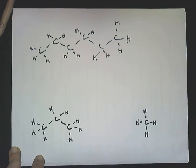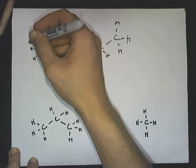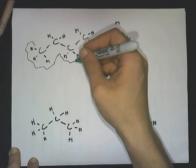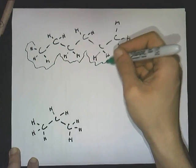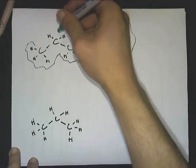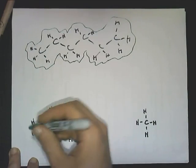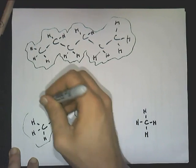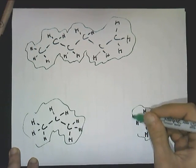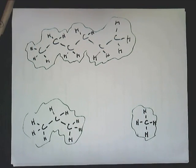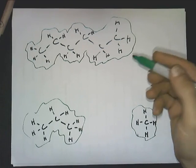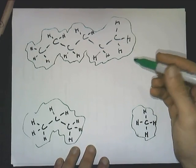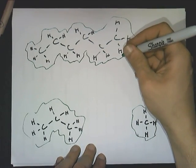So if we imagine the electron cloud around these molecules, hexane up here has the largest electron cloud. Propane is a little bit smaller, and methane has got a pretty small electron cloud. Because hexane has a larger electron cloud, there are more spaces that could become polarized.